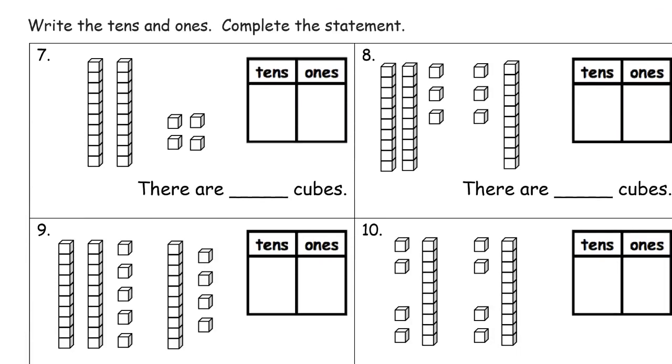And now we're writing tens and ones, same as before. Now we're looking at the dienes cubes here. And we have two ten sticks and four ones for twenty-four cubes. And here we have one, two, three ten sticks and six ones, that's thirty-six cubes.